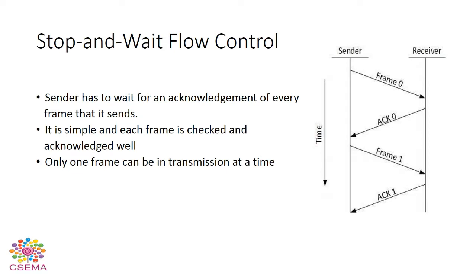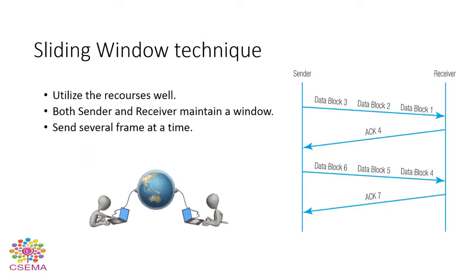In Stop and Wait flow control, the sender has to wait for an acknowledgement of every frame that is sent. In this figure, we can see that the sender sends Frame 0, and after sending Frame 0, the sender waits to receive the acknowledgement sent by the receiver. The acknowledgement for Frame 0 is received by the sender, then it sends the next frame, Frame 1. The receiver receives the frame without any error, then sends the acknowledgement back to the sender. It is very simple — frames are processed one by one, so in Stop and Wait flow control, only one frame can be transmitted at a time.